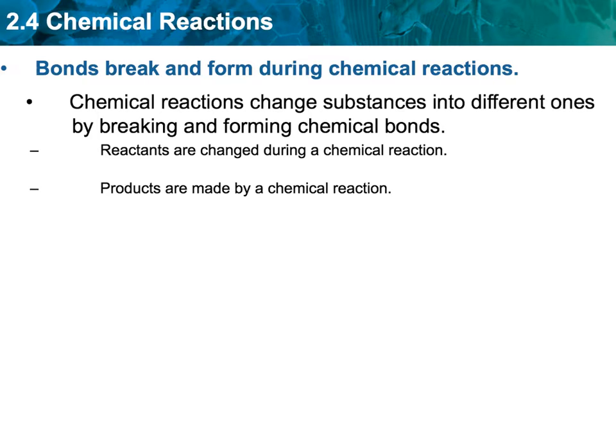We're going to learn where the reactants versus the products are in the reaction. Reactants tend to be on the left side, products tend to be on the right side if it's a chemical equation with an arrow.